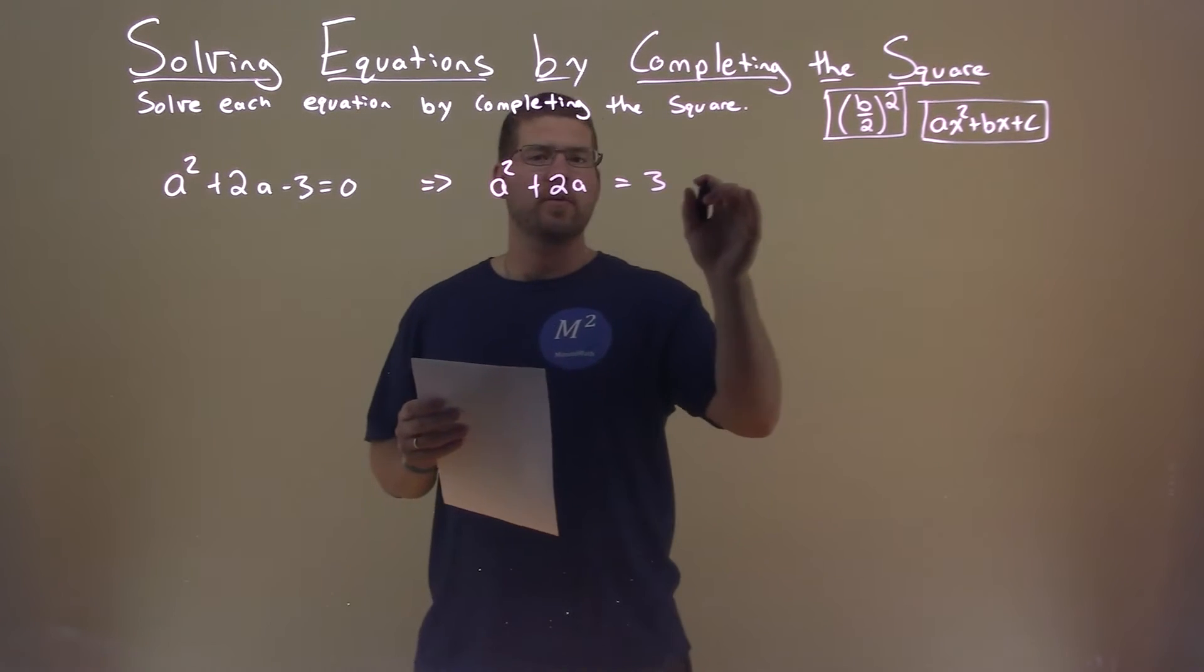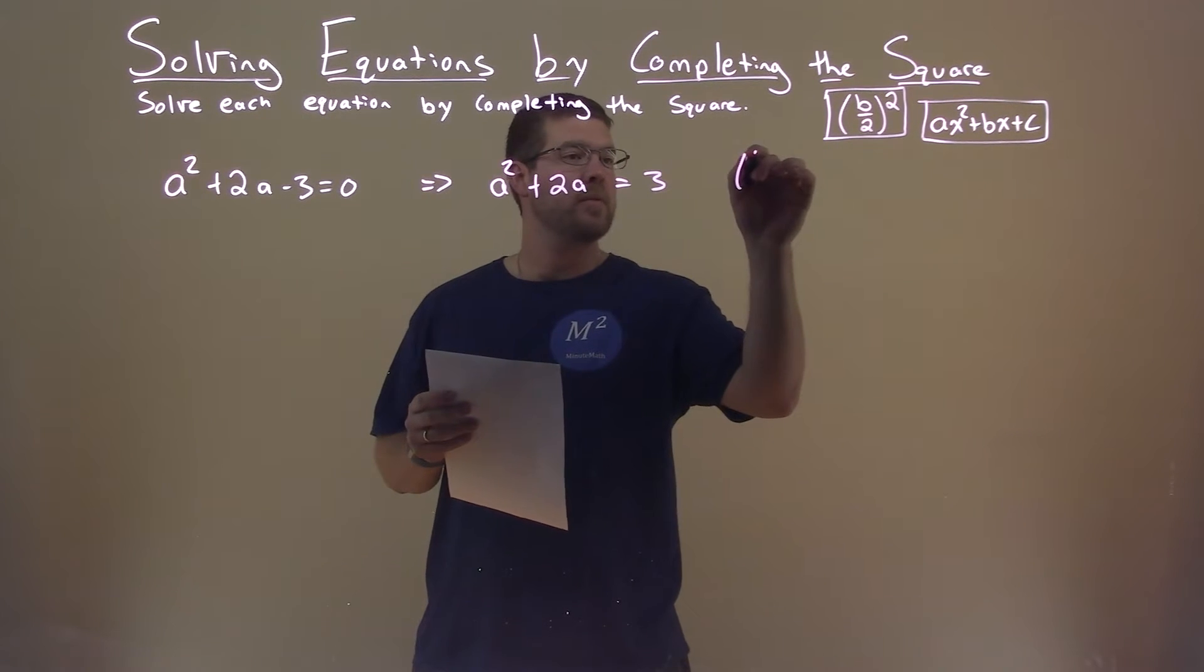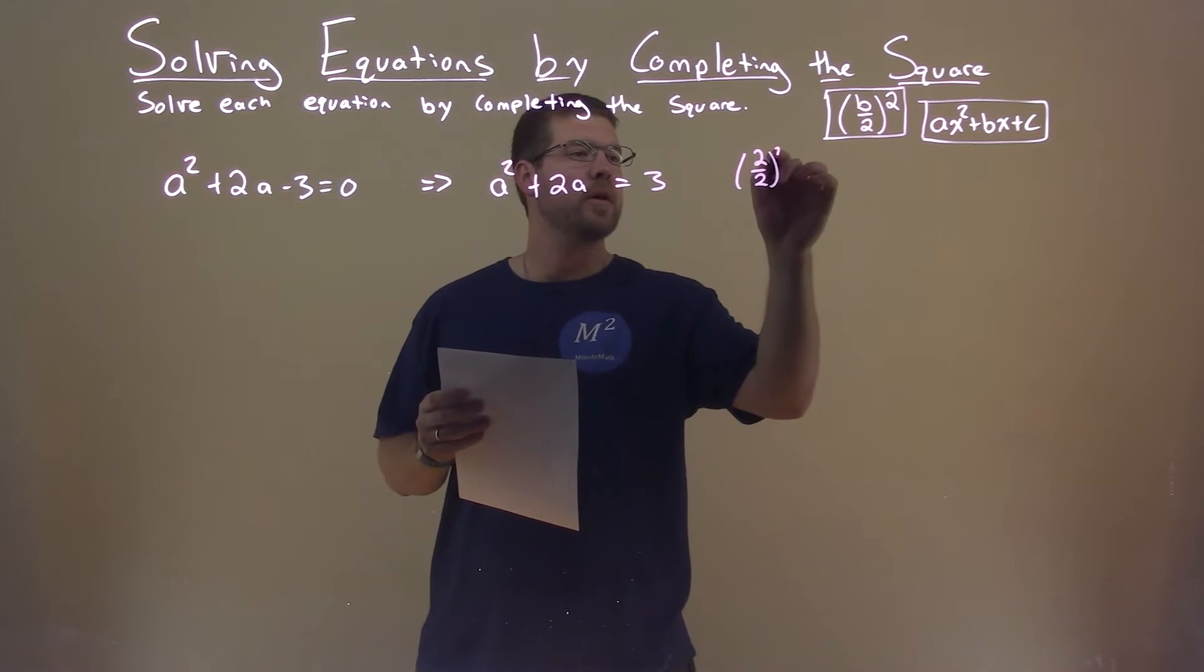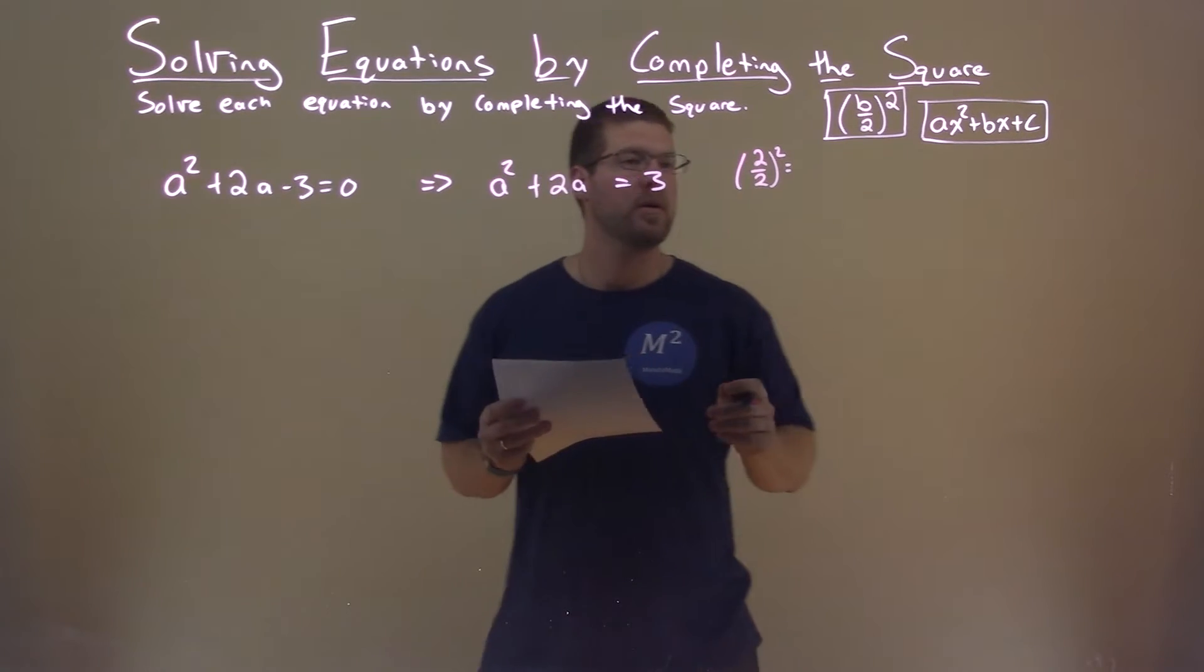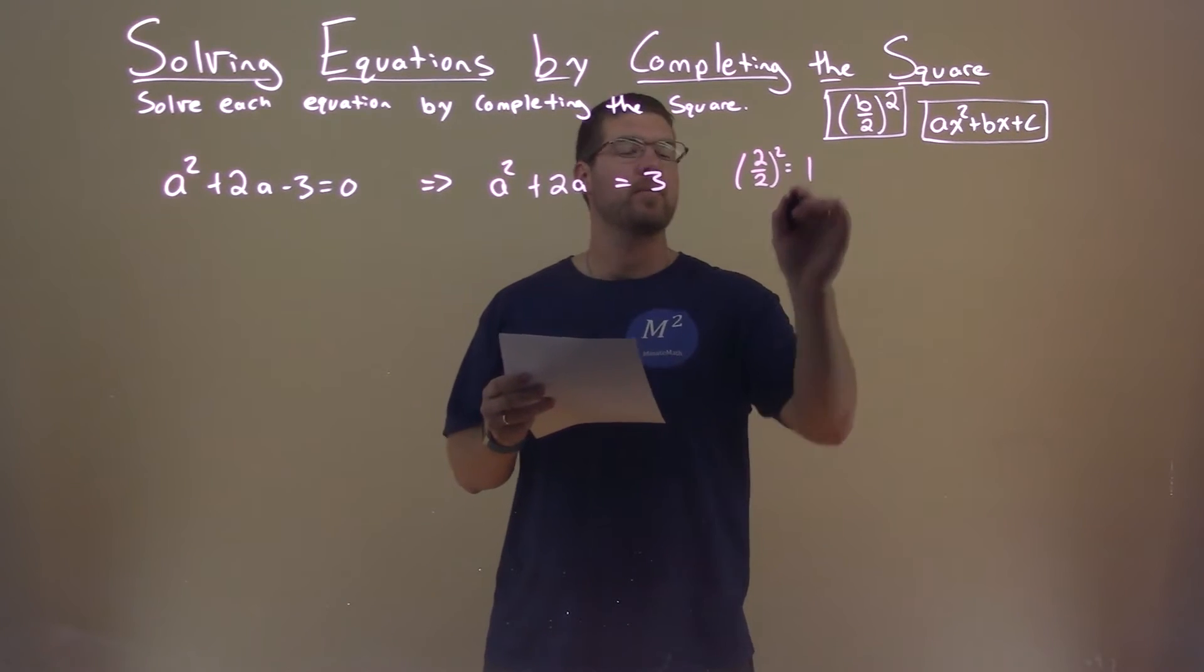Now we have to look at our b value, b value being 2. 2 divided by 2, we use a formula, and we square that. What does that come out to be? Well, 1.